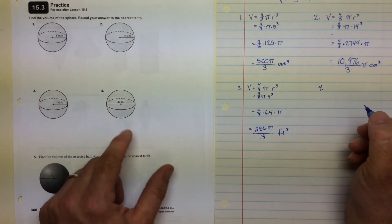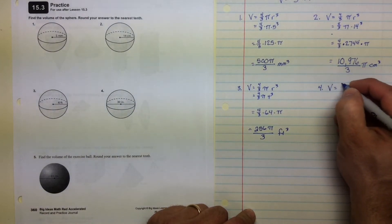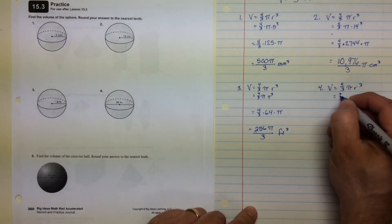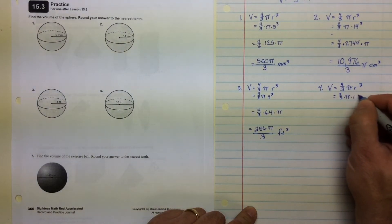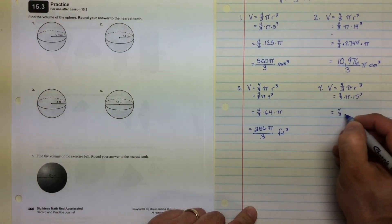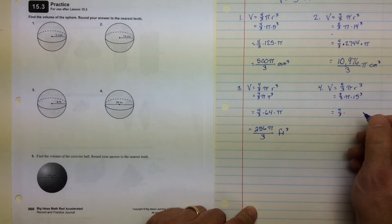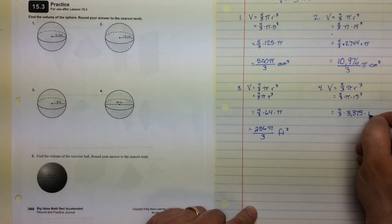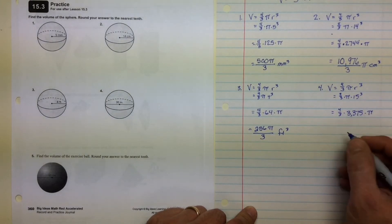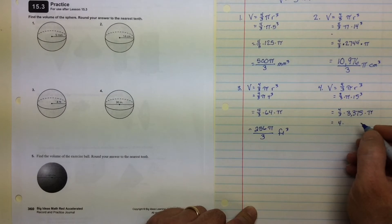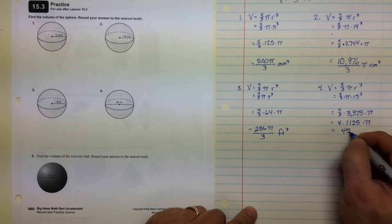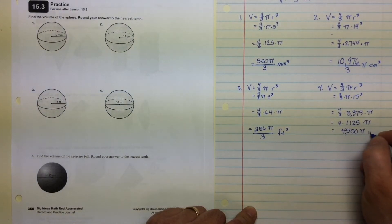Number 4. Finally, a little variation. They gave us the diameter. We need the radius. So we'll use 15 instead of 30. 15 cubed is 3,375, 3,375, that's a comma, not a decimal, times pi. Finally, something that's divisible by 3. If I divide that by 3, I'll now have 4 times 1,125 times pi. Multiply that by 4, 4,500 pi, and it'll be inches cubed.